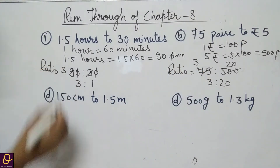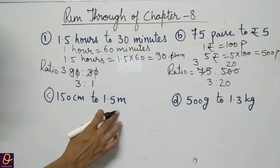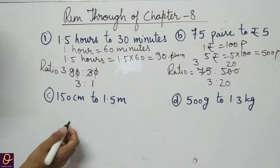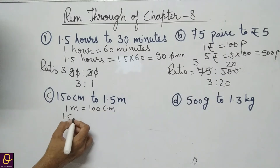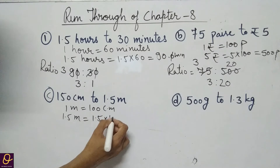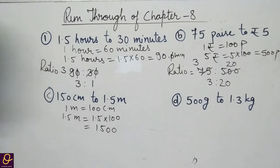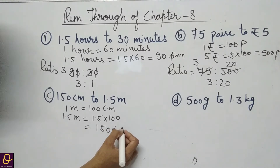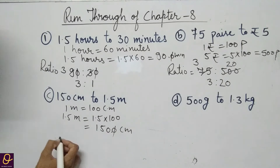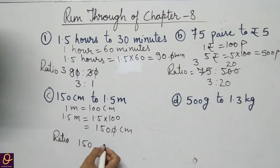Part C: 150 cm to 1.5 meters. We will change meters to centimeters. 1 meter equals 100 cm, so 1.5 meters equals 1.5 into 100. Moving the decimal one place gives 150 cm. So the ratio is 150 cm to 150 cm, which is 1 ratio 1.